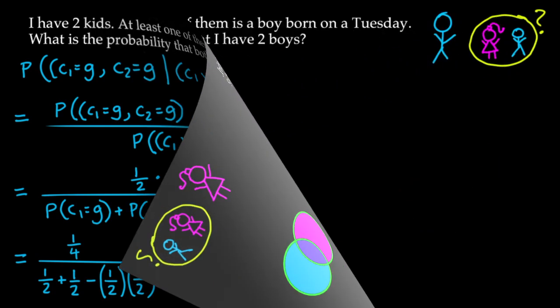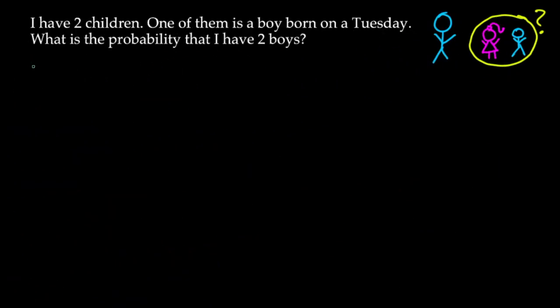The third problem goes off the rails a little bit. We change the wording again: I have two children, one of them is a boy born on a Tuesday — what is the probability that I have two boys? You may be thinking what does being born on a Tuesday have to do with anything, but you'll see.